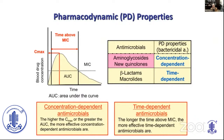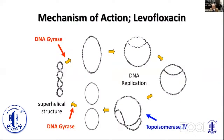For concentration-dependent antimicrobials, the higher the Cmax or the greater the AUC, the more effective they are. The key terms are Cmax, MIC, and AUC. For time-dependent antimicrobials, the longer the time above MIC, the more effective they are. For new quinolones like levofloxacin, Cmax and AUC are the key parameters, and they inhibit DNA gyrase and topoisomerase IV.